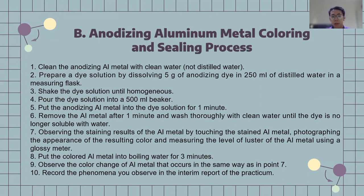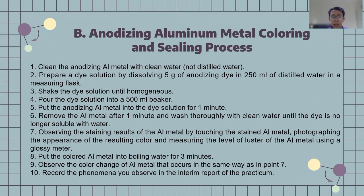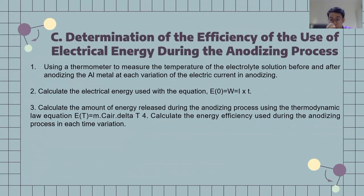Observe the staining results of the aluminum metal by touching the stained surface. Photograph the appearance of the resulting color and measure the level of luster of the aluminum metal using a gloss meter. Then put the colored aluminum metal in boiling water for three minutes and observe the color change that occurs. Record the phenomena you observe in the report of the practical experiment.